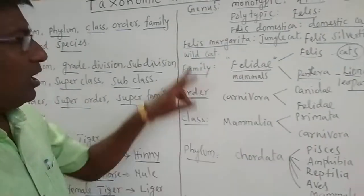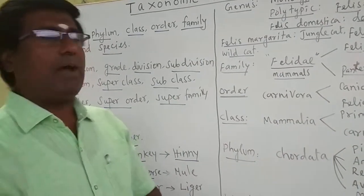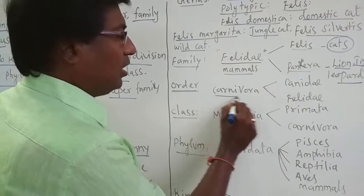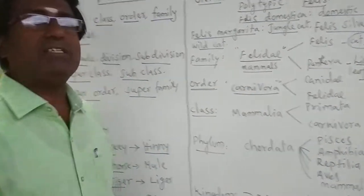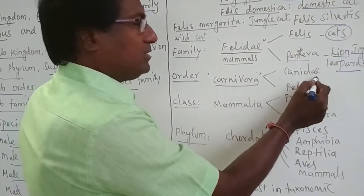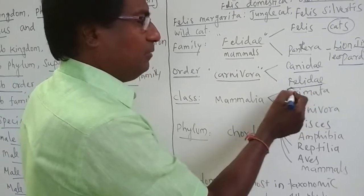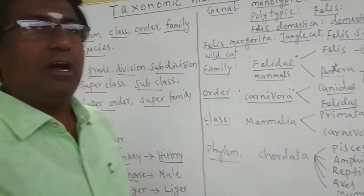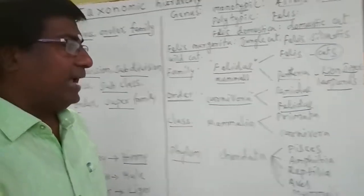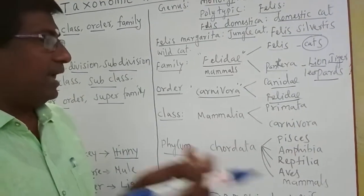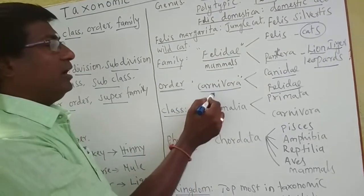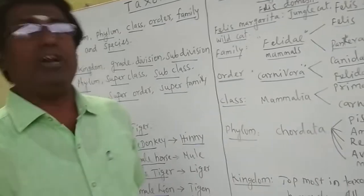The next higher category is the order. One or more closely related families are put into one order. For example, the order Carnivora — meaning flesh-eating animals — contains two families: Canidae, which includes dogs and foxes, and Felidae, which includes tigers and cats. These two families are placed in the order Carnivora.